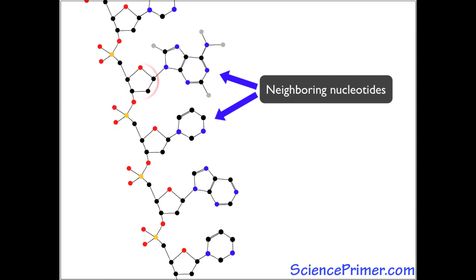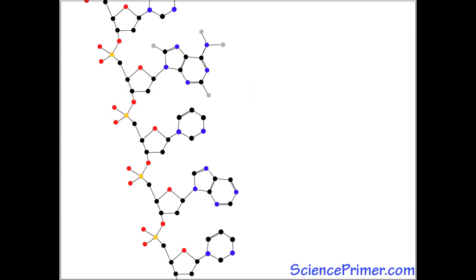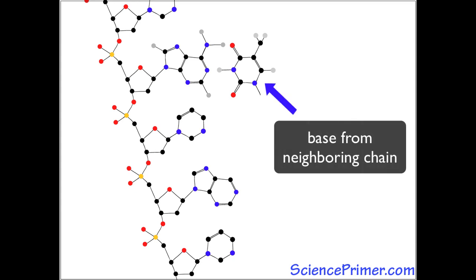In addition to the strong covalent bonds that hold polynucleotide chains together, bases along a polynucleotide chain can form hydrogen bonds with bases on other chains, or with bases elsewhere on the same chain, as with secondary structure in RNA.